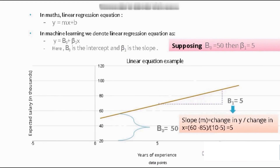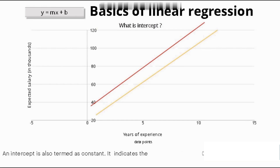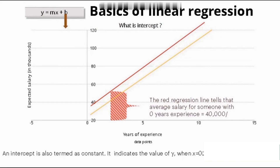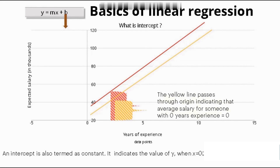Now let's go in depth to understand the basics of the linear equation: what is slope, what is intercept, and what do changing slope and changing intercept imply? The intercept is simply the value of y when x equals zero. For example, one regression line indicates that someone with zero experience will get at least a 40k salary because the starting point is 40, whereas another regression line indicates zero salary at zero experience because the starting point is zero.